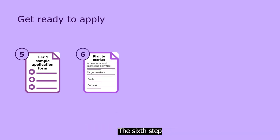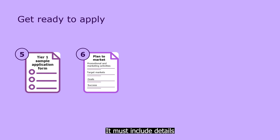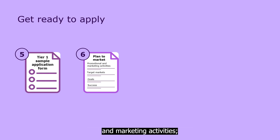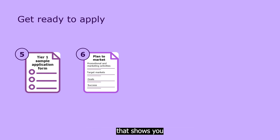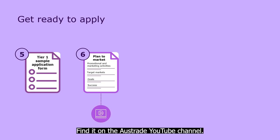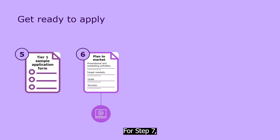The sixth step is to prepare your unique, high quality plan to market. It must include details such as your planned promotional and marketing activities, your target markets, your goals and how you will measure success. There's another video in this series that shows you how to prepare a high quality plan to market. Find it on the Austrade YouTube channel.